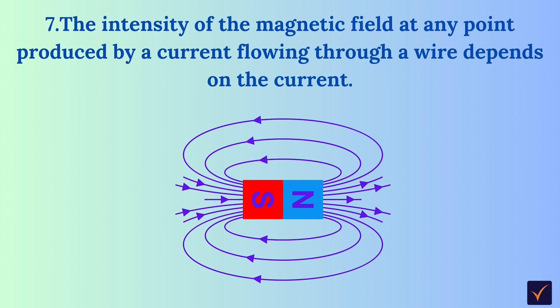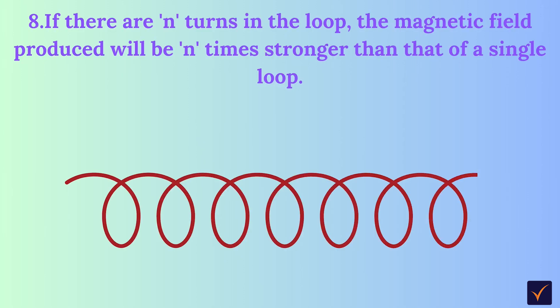The magnetic field depends on the current. If there are n turns in the loop, the magnetic field produced will be n times stronger than that of a single loop.